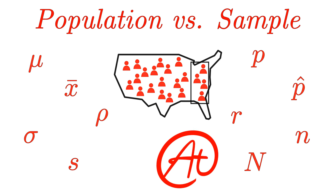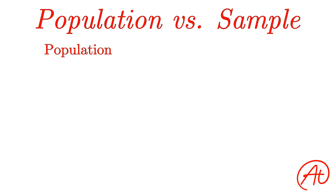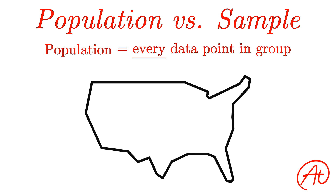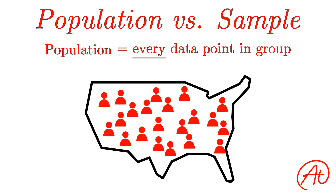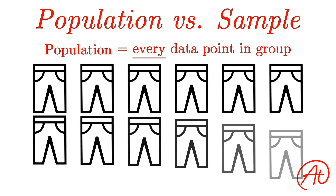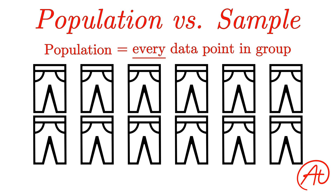So first, what is a population? Well, a population is every single person, or thing, or data point that belongs to a certain group. For example, a population might be every person that is a citizen of your home country. Or in another example, a population might be every pair of pants that your company manufactures.